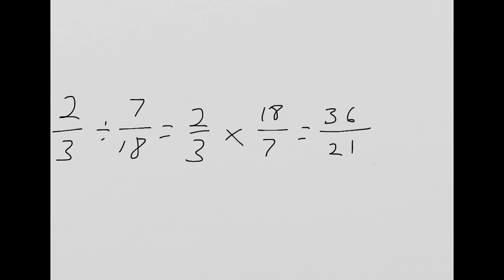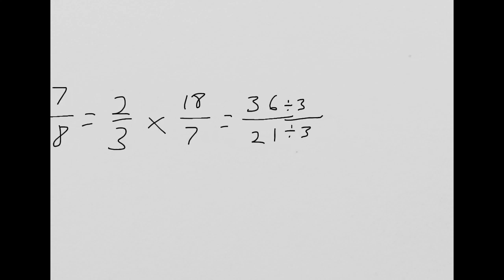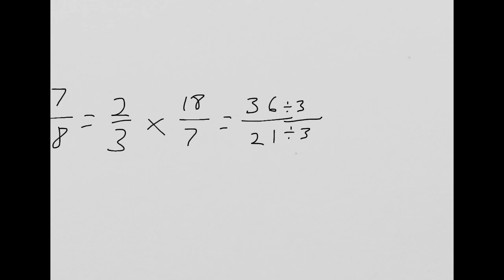And can I simplify? Well, looks like I can. Three is a factor of 36, because three times twelve is 36, and three is a factor of 21. So I'm going to divide both the numerator and the denominator by three. To simplify, you always have to do the same thing to the numerator as you do to the denominator, because really what we're dividing by is one here, it's 3/3, and so that becomes 12/7.